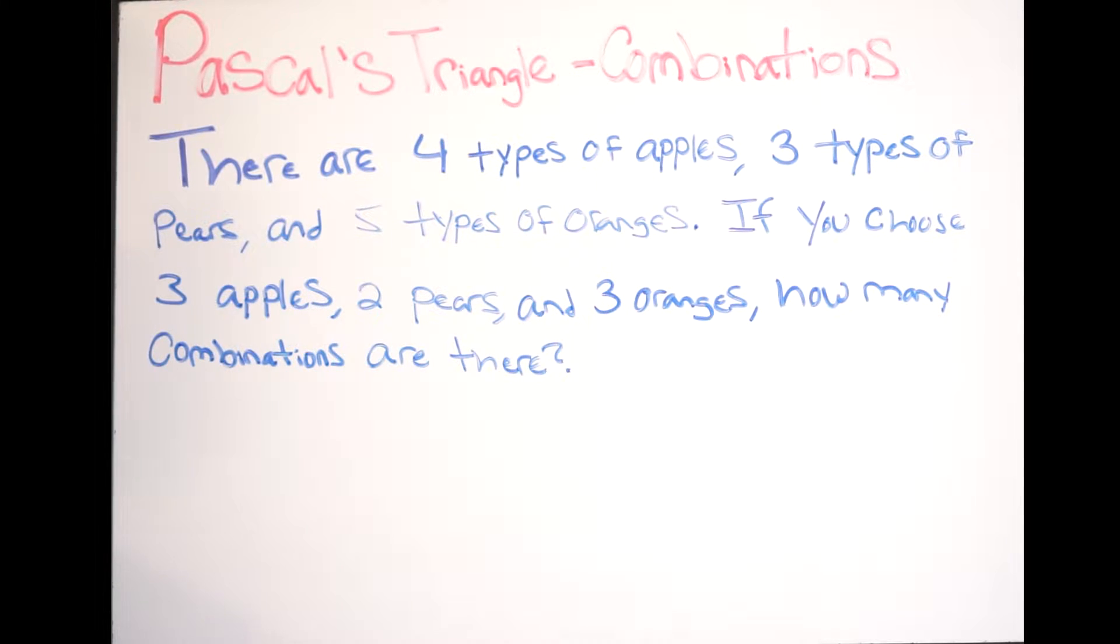So let's get right into it. It says there are 4 types of apples, 3 types of pears, and 5 types of oranges. If you choose 3 apples, 2 pears, and 3 oranges, how many combinations are there?